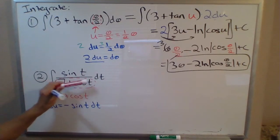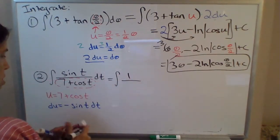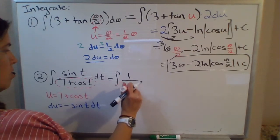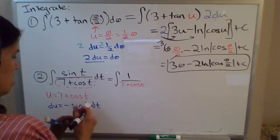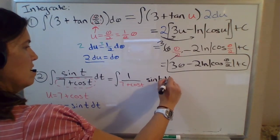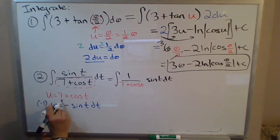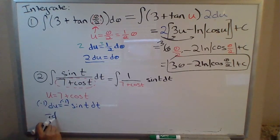Now you might also notice inside this integral, what we have is sine of t. So this is 1 over 7 plus cosine of t. And then you've got sine t dt, which sine t dt, if we multiply both sides by negative 1 here, is equal to negative du.